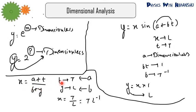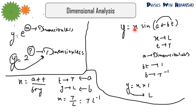Suppose x = (a + t) / (b + y), where dimension of t is time and y is length. Since a + t must be consistent, a is time. Since b + y must be consistent, b is length. So x = T / L = TL⁻¹. For y = x·sin(a + bt), where x is length and t is time: since a + bt is the argument of sine, it must be dimensionless. So a is dimensionless, bt is dimensionless meaning b = T⁻¹, and since sine is dimensionless, y = x = length.